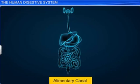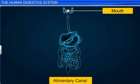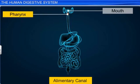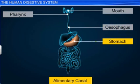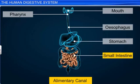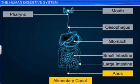The alimentary canal — the long pathway through which food enters the body and solid waste is excreted — includes organs such as the mouth, pharynx, esophagus, stomach, small intestine, large intestine, and anus.